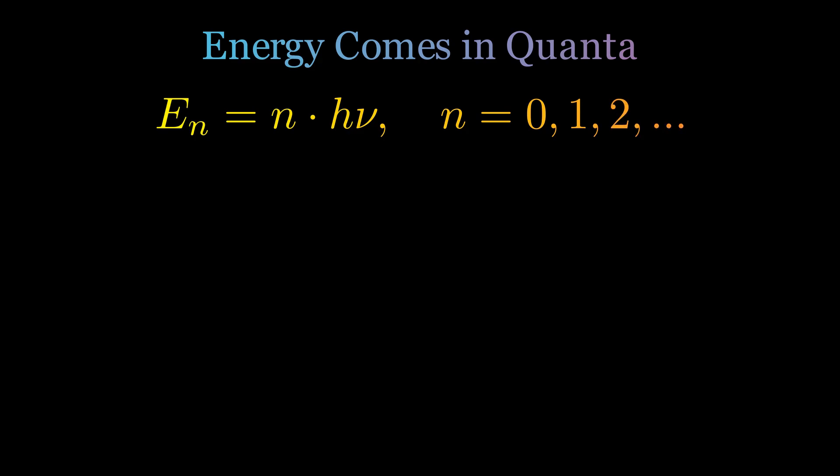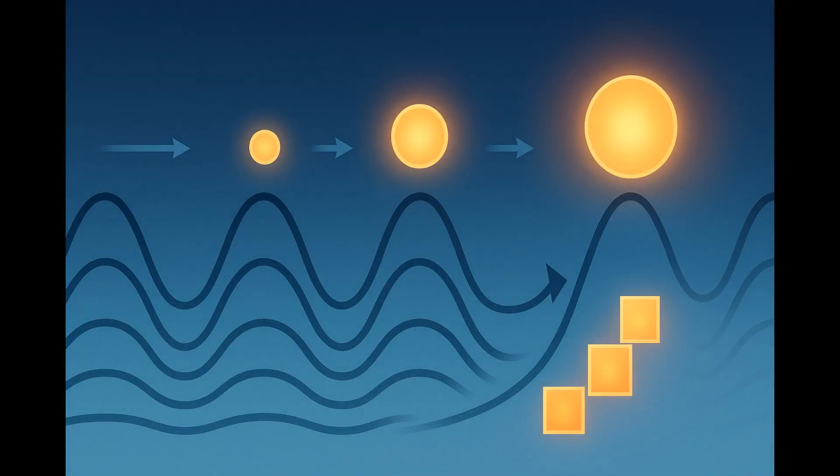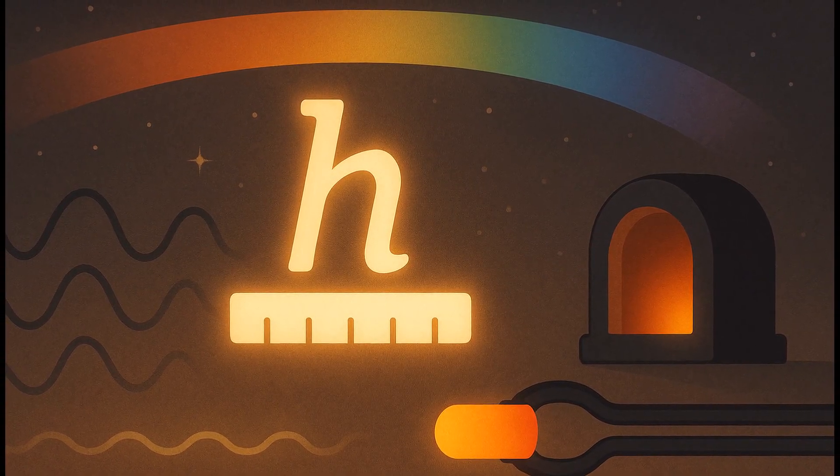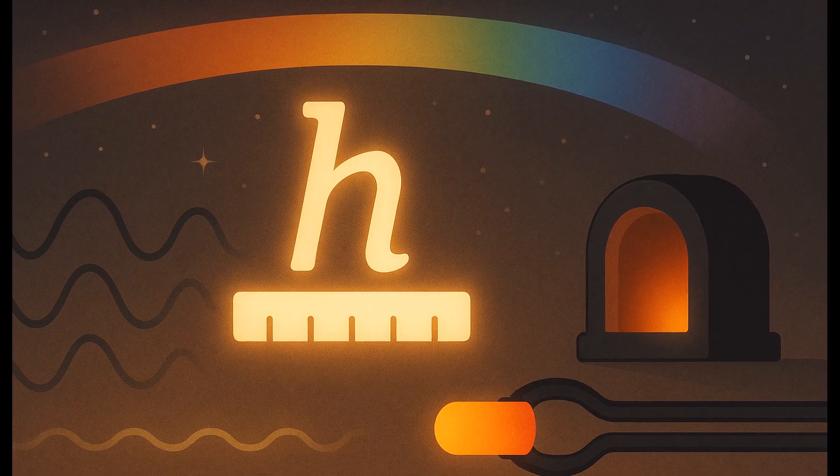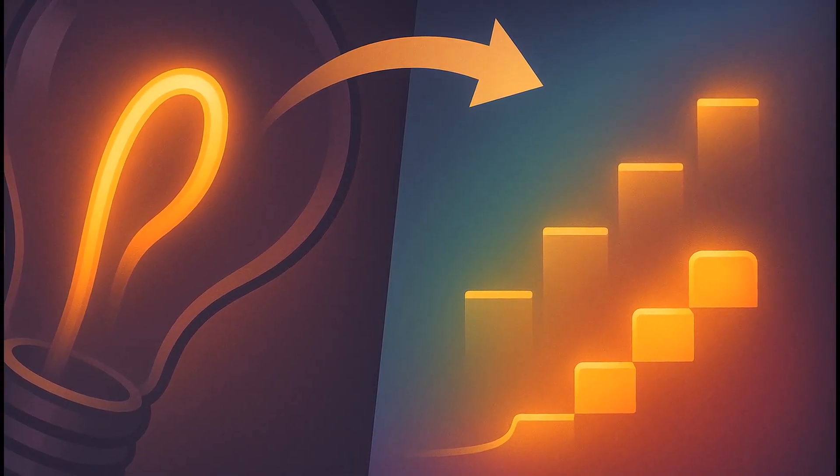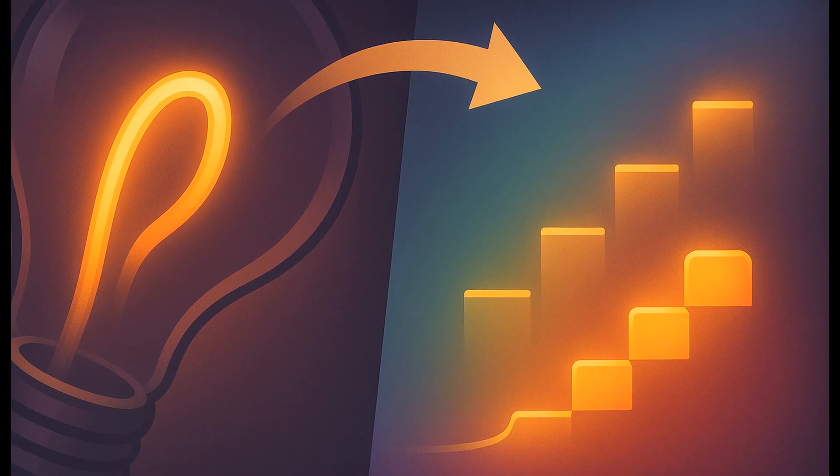Energy comes in packets, quanta. Each packet's size depends on the frequency of light, multiplied by a new constant of nature. This is Planck's constant, the fundamental scale of quantum physics, and basically, our world. It was unimaginably small, but it explained why heated objects glow the way they do.